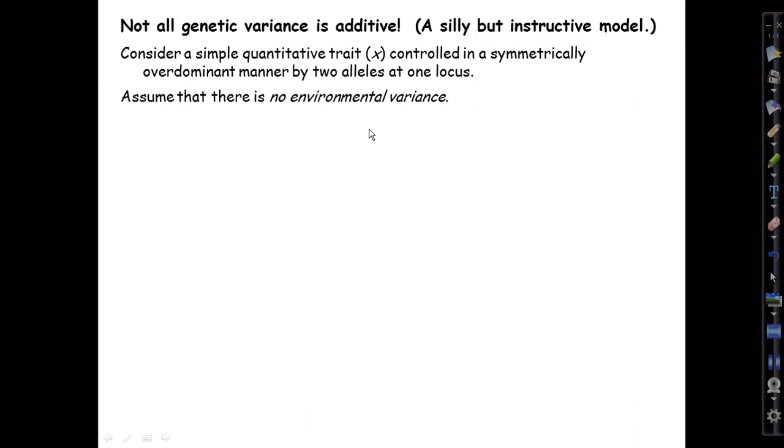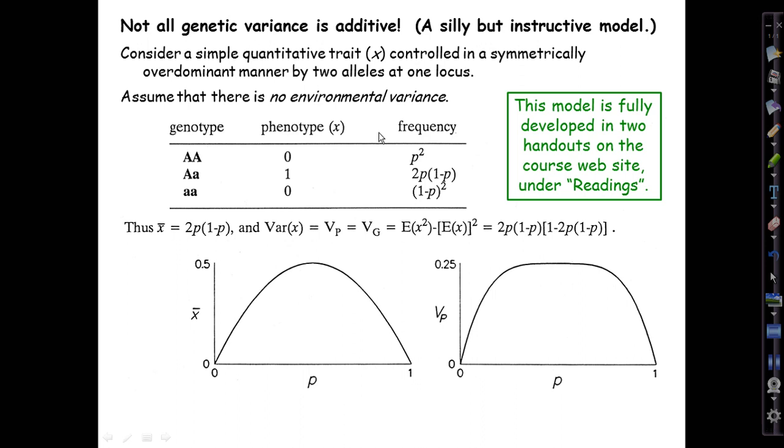We're going to consider a quantitative trait X controlled in a symmetrically over-dominant manner by two alleles at one locus, and we assume there is no environmental variance. Here's the table showing the genotypes—the three of them—and their phenotypes: zero, one, and zero. So the heterozygotes have a phenotypic value of one, both homozygotes have a phenotypic value of zero.